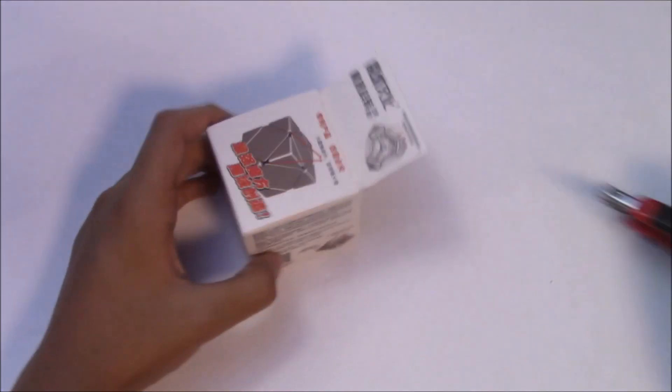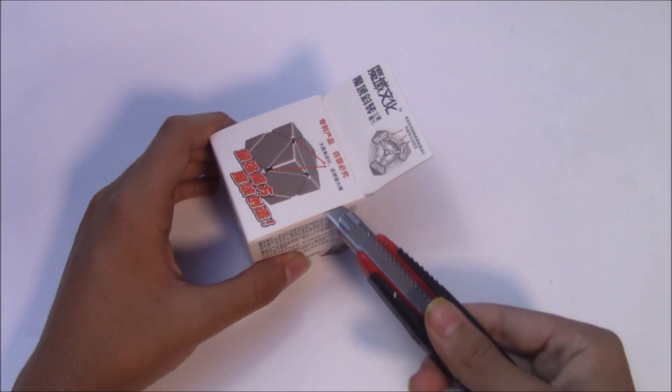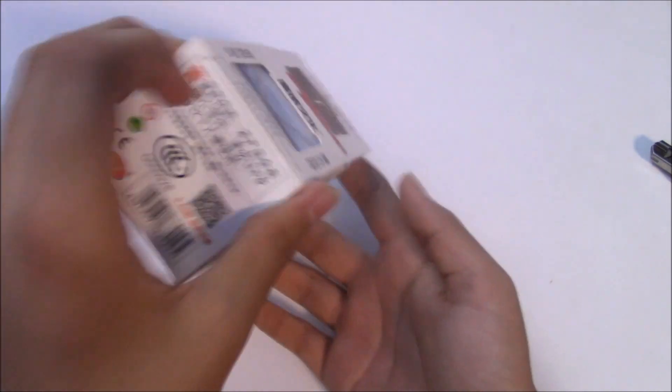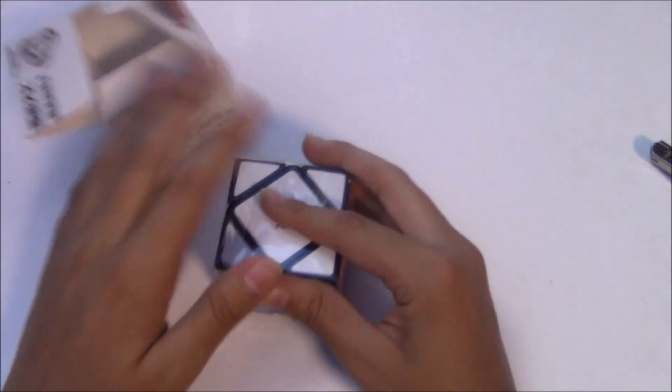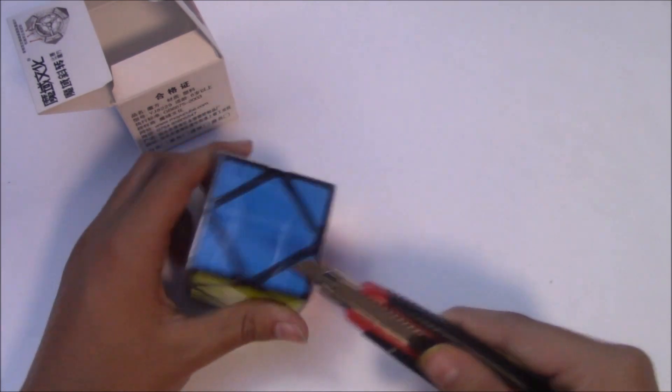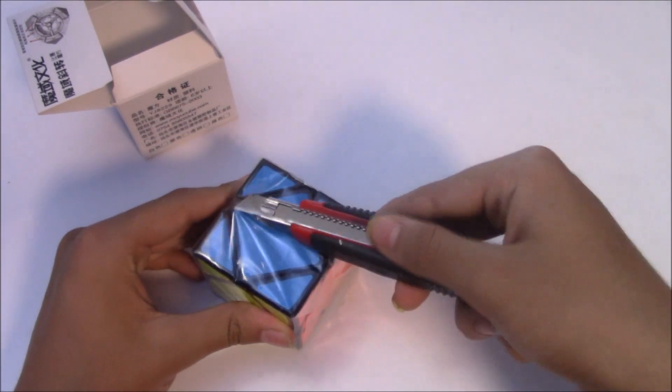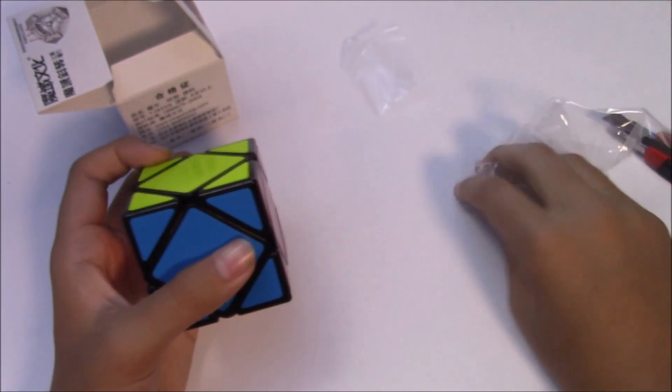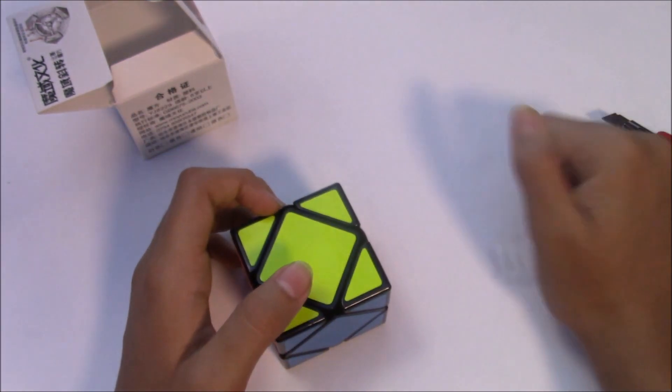Let's move on to the Moyu Skew. All right, so there it is—plastic wrapping like most puzzles these days. Let's just cut that open. I didn't have a black Moyu Skew because I traded it at a competition, so I just wanted one.